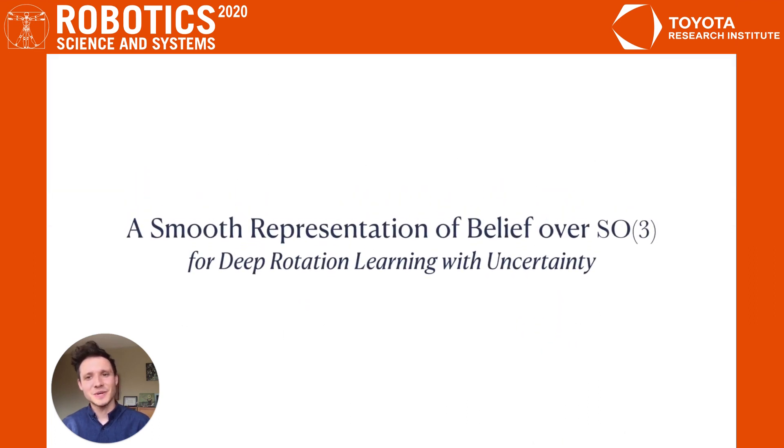That is a mouthful, so I'd like to unpack what an SO3 representation is, what it means for it to be smooth, what makes our representation of belief, and why these properties matter for learning.